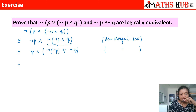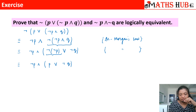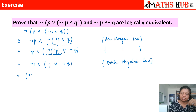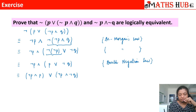Next, we apply the double negation law to negation(negation P), giving P. So we have negation P AND (P OR negation Q). Then we apply the distributive law: (negation P AND P) OR (negation P AND negation Q).